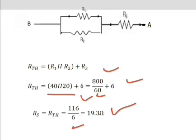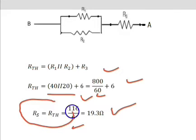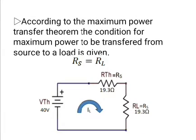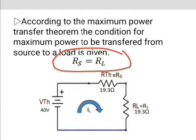The Thevenin's resistance is equal to the source resistance, that means RTH equals RS. According to the maximum power transfer theorem, the condition for maximum power to be transferred from source to load is that the source resistance is equal to the load resistance. So RL equals 19.3 ohms and VTH equals 40 volts.